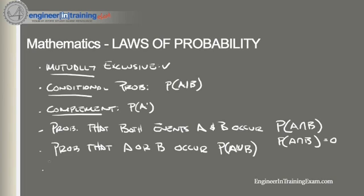If the occurrence of event A changes the probability of event B, then events A and B are dependent. On the other hand, if the occurrence of event A does not change the probability of event B, then events A and B are independent. The probability of an event occurring ranges from zero to one, and the sum of the probabilities of all possible events is equal to one.